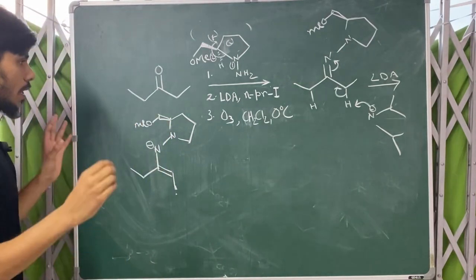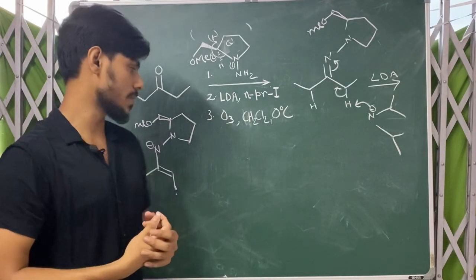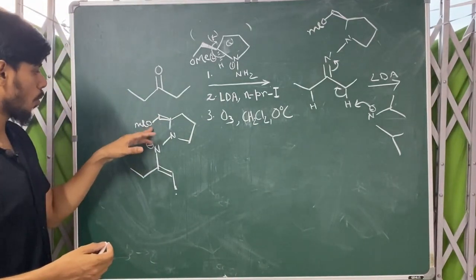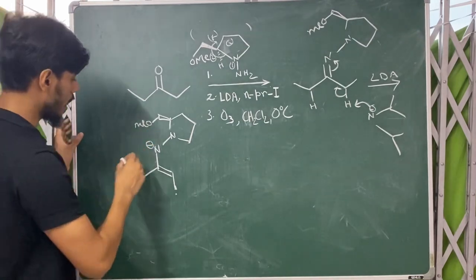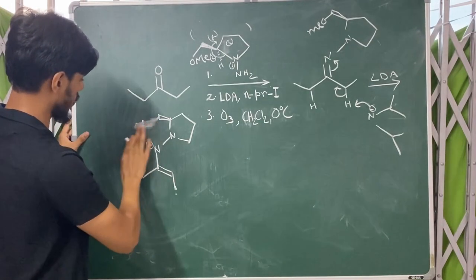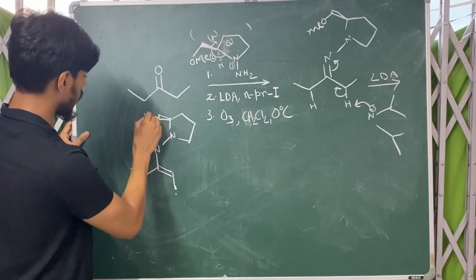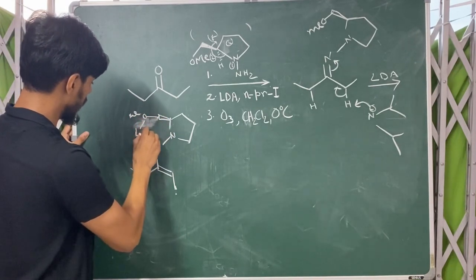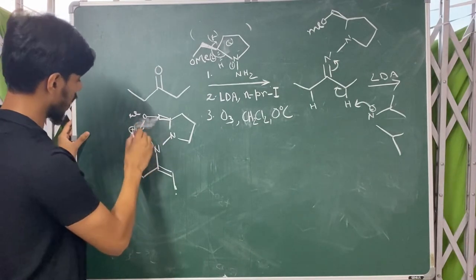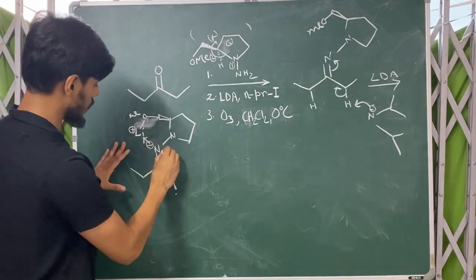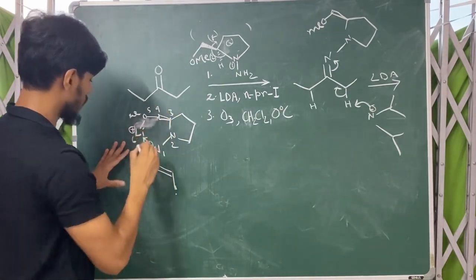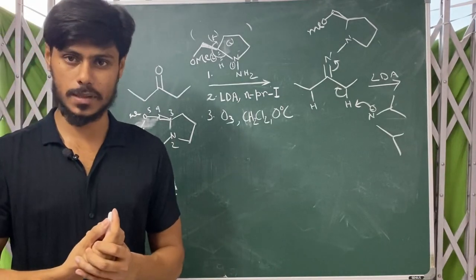You have lithium in your reaction medium — lithium plus — and you have a negative center over here and oxygen from the OMe over here. So here you will have chelate formation: this OMe oxygen, lithium, and the nitrogen center form a chelate. Counting 1, 2, 3, 4, 5, 6 — a 6-membered chelate ring is formed.